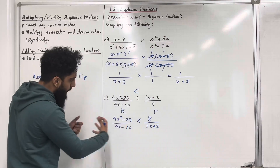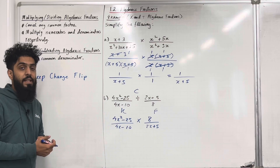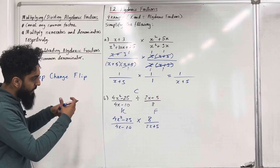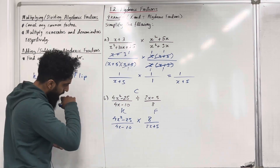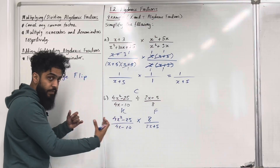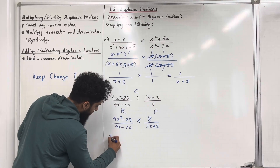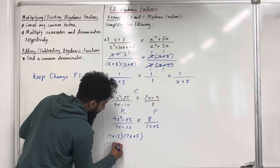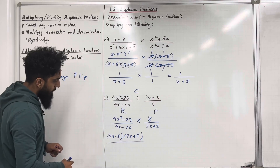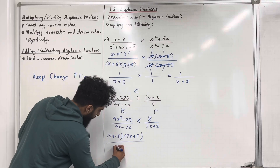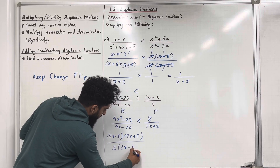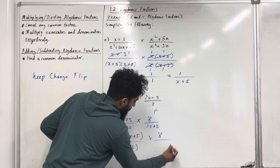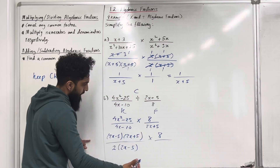Now I'm multiplying two fractions, so I'll cancel out any common factors. First I need to factorise. The numerator 4x squared minus 25 is a difference of two squares, so the factorisation is 2x minus 5 times 2x plus 5. The denominator 4x minus 10 factorises into 2 times 2x minus 5. The 8 stays as it is, and we've got 2x plus 5 which stays as it is.